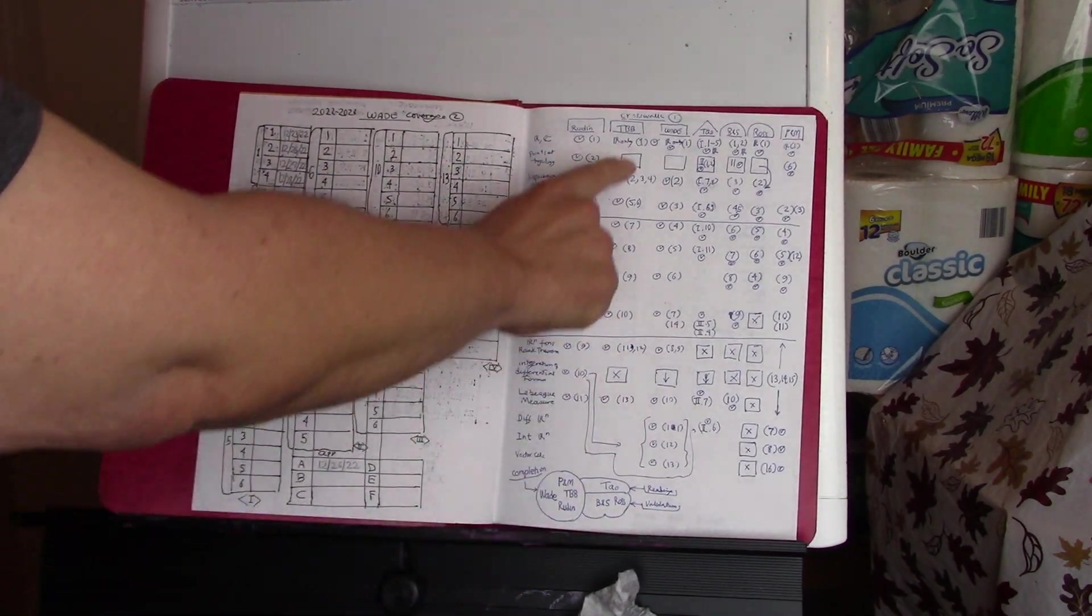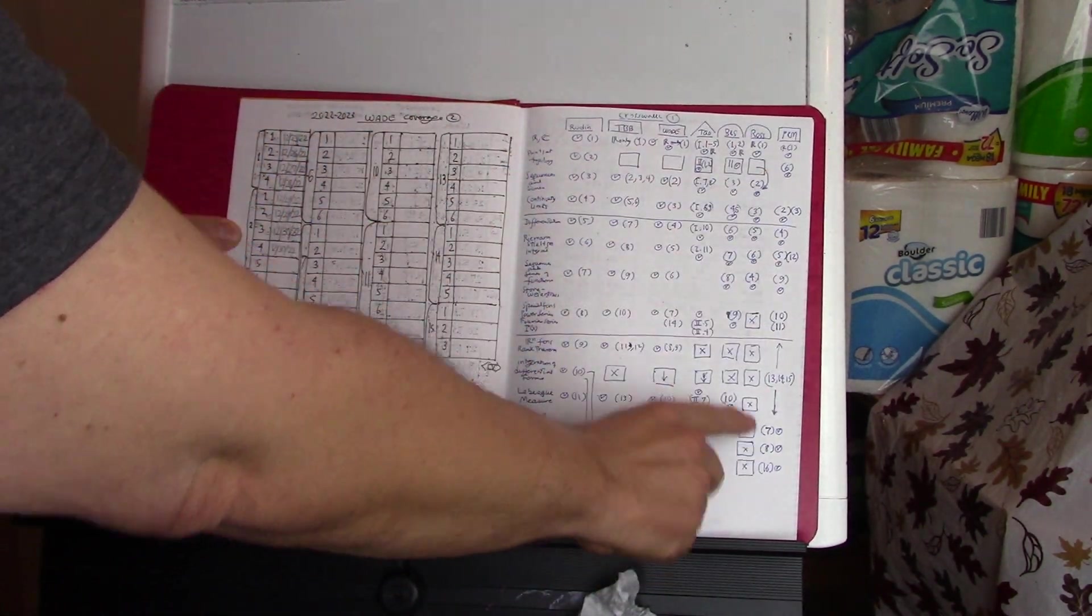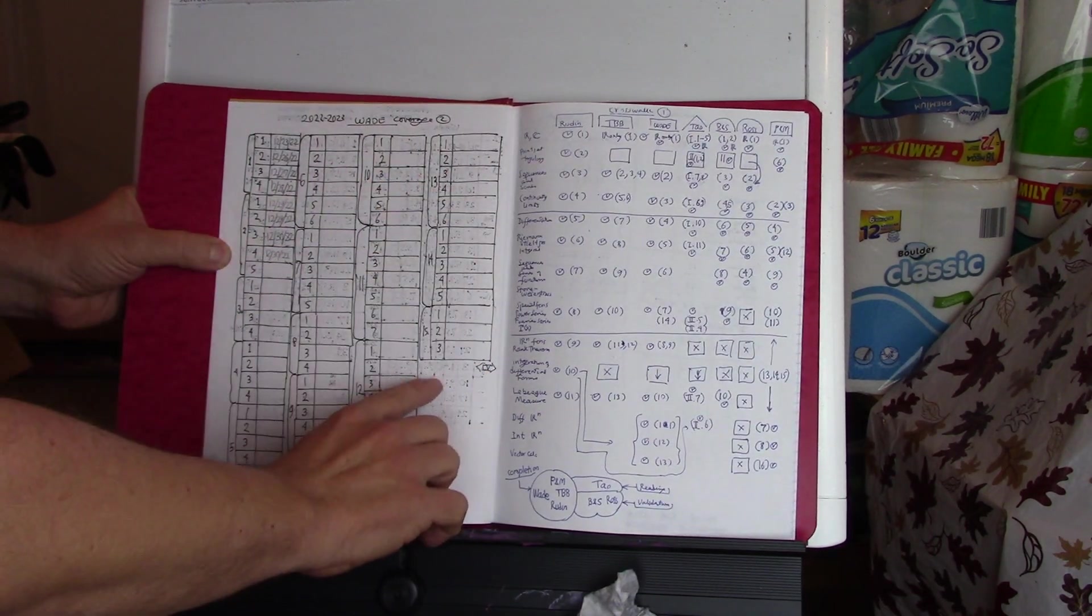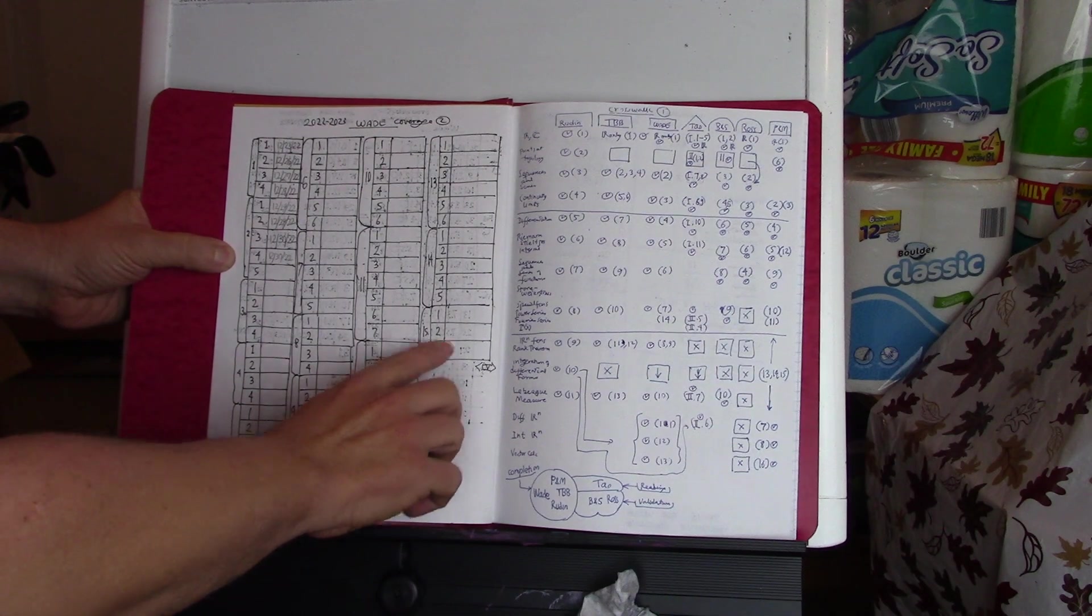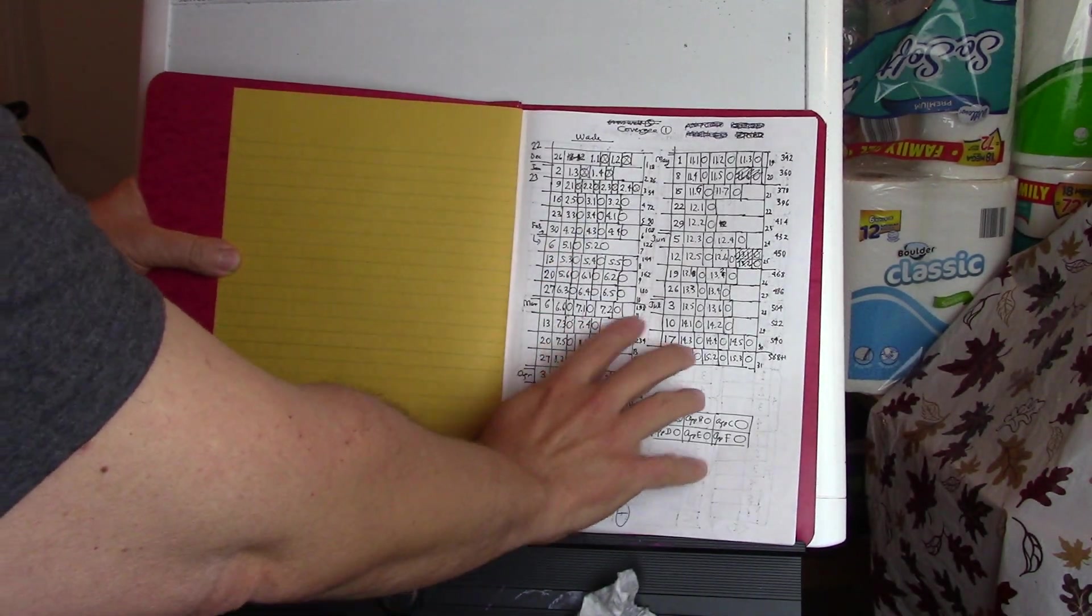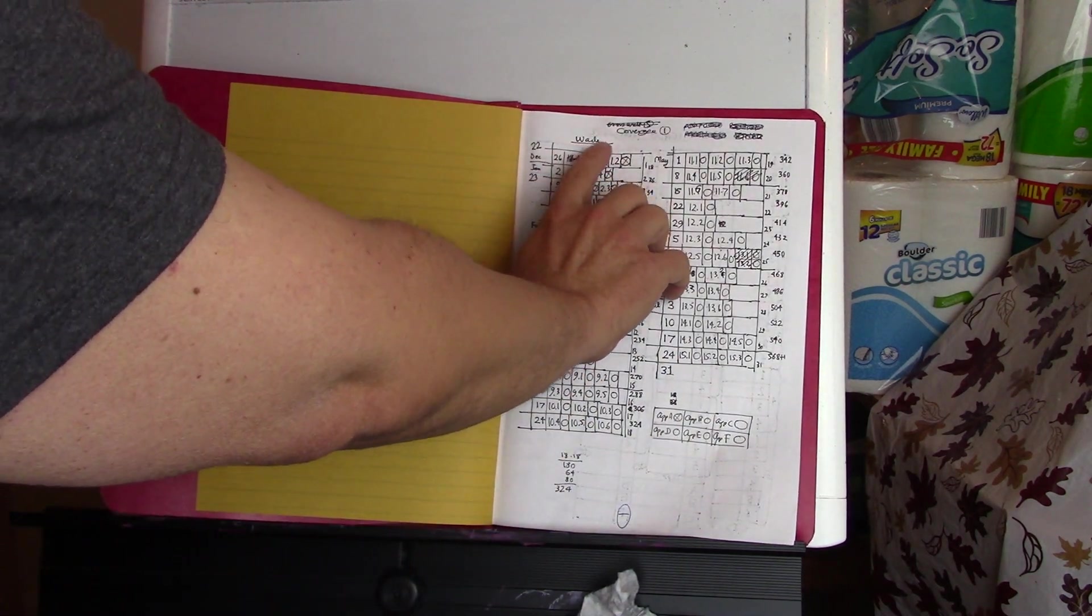So I did a crosswalk of most of the books that I have. I also gave myself a schedule of 31 weeks. I figured out how many weeks in 2023, 31 weeks where I want to read Wade.